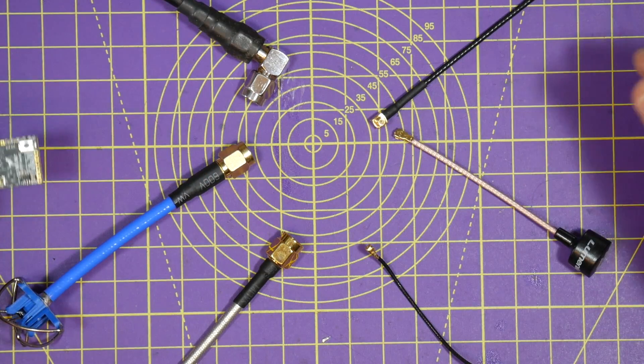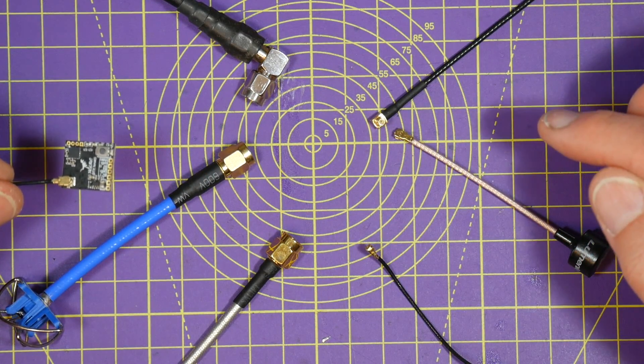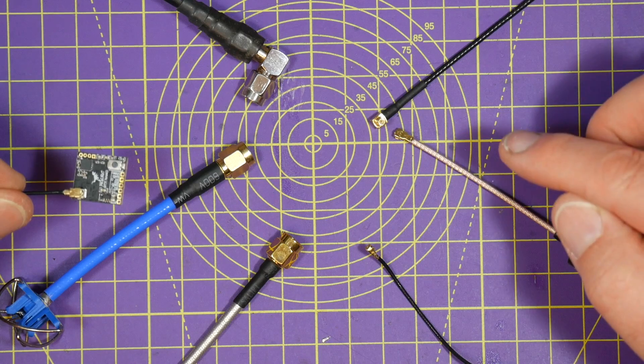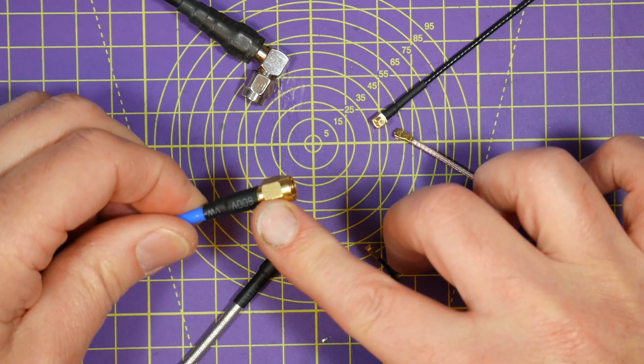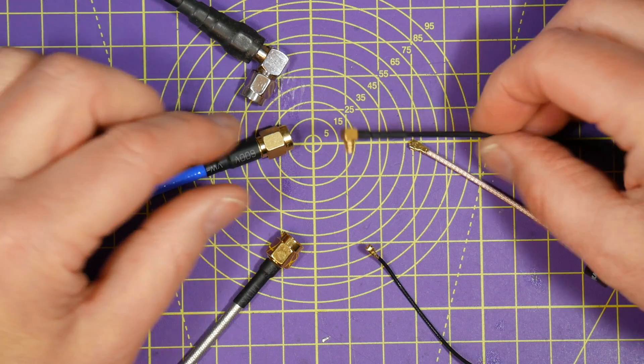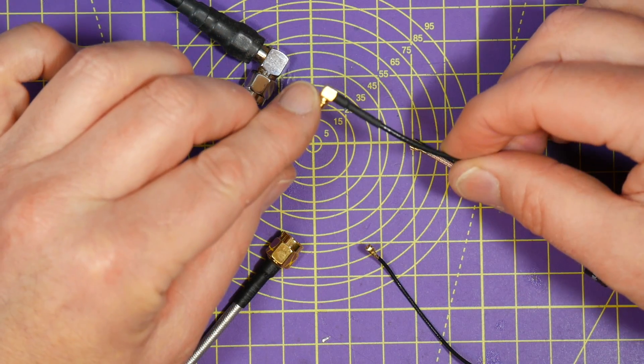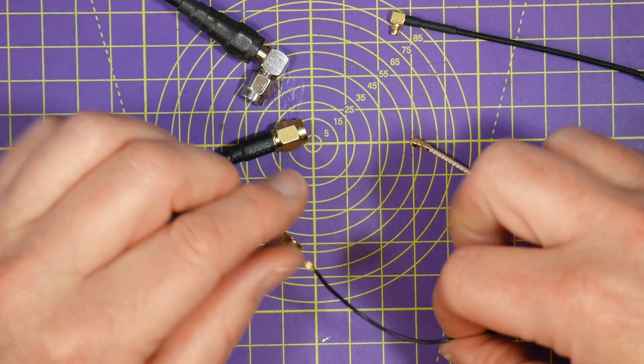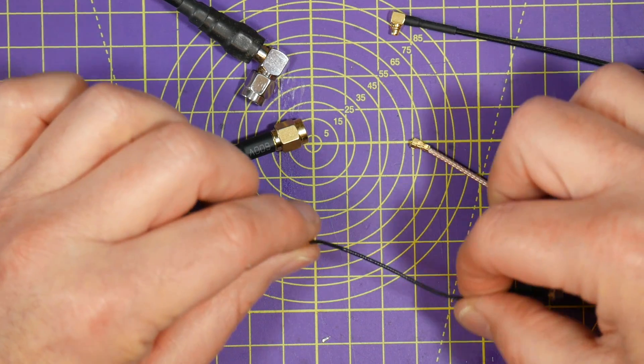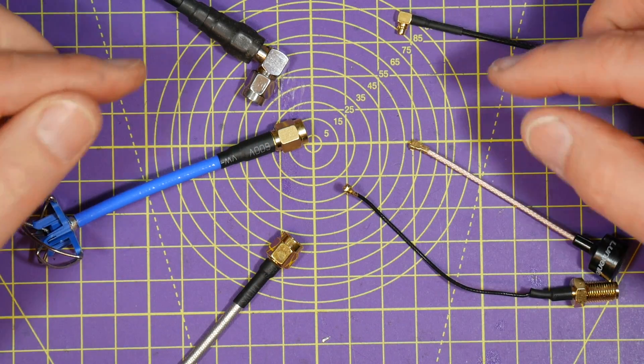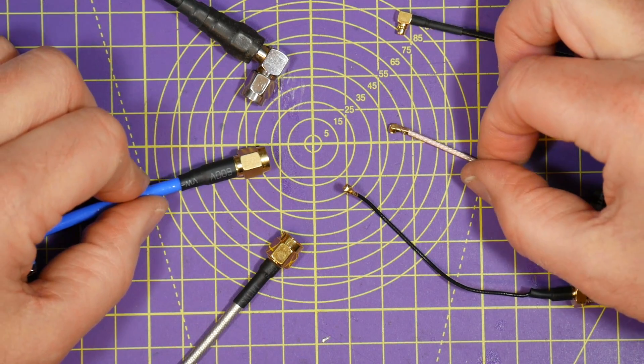And at the moment, there's three competing FPV drone antenna connector standards. There's SMA, like this, MMCX, like this guy here, and UFL, which is this little tiny guy there. And they all have different benefits, costs, reliability, and application.